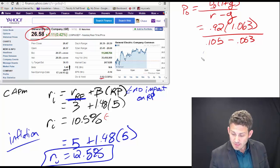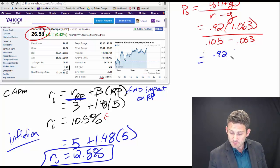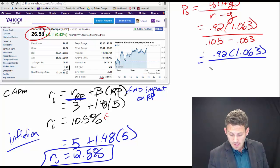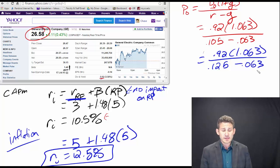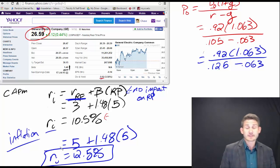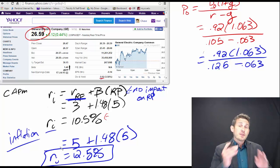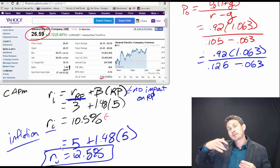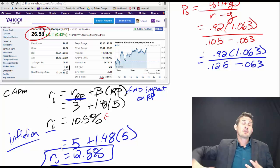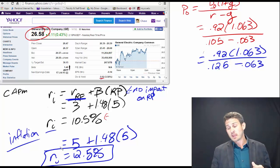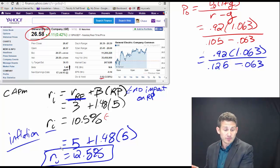So we can plug that in up here using all the same information. We still have the same level of growth and this is now gonna be 1.125 minus 0.063. The only change here is in this required return because of the inflation. The inflation happens which impacts that base risk-free rate which then impacts the required return on General Electric which then gets plugged into our Gordon growth model and it's going to have a different price.